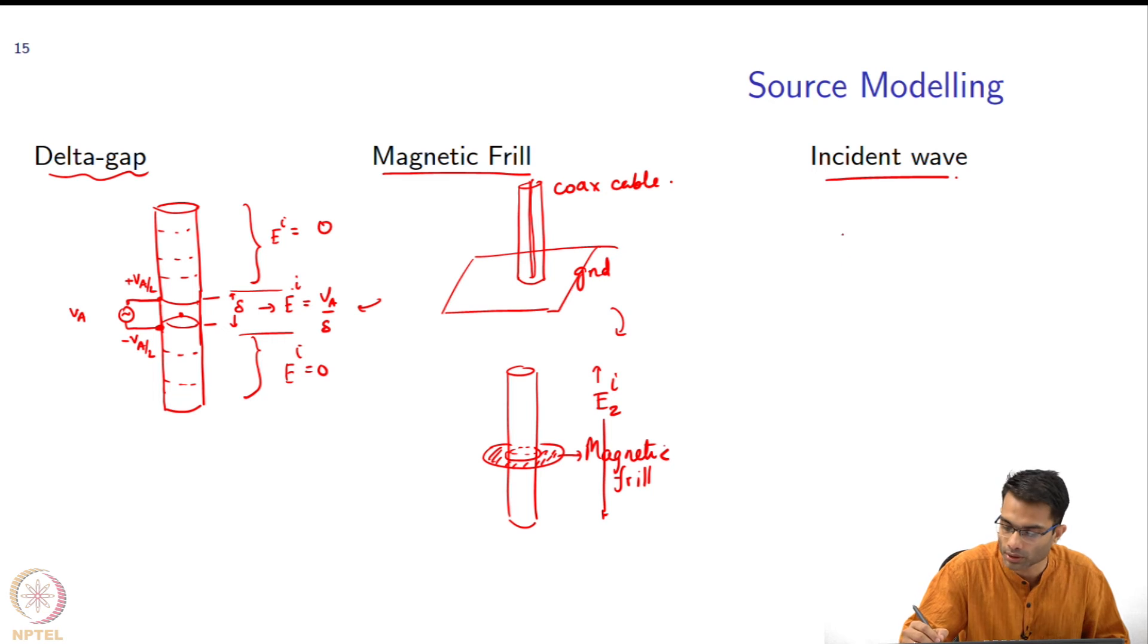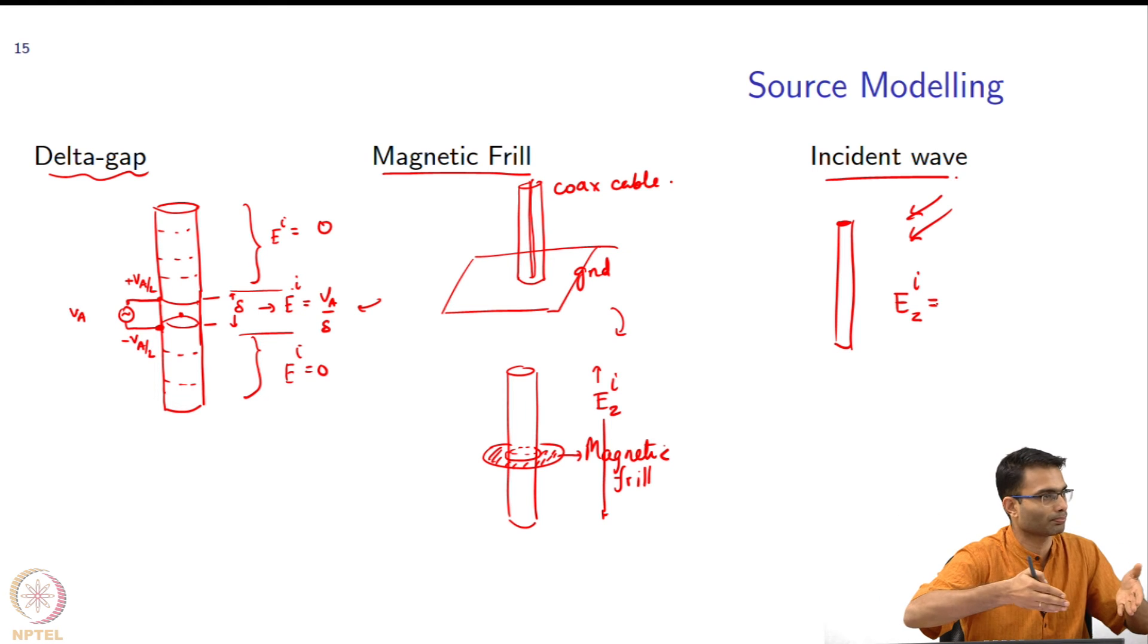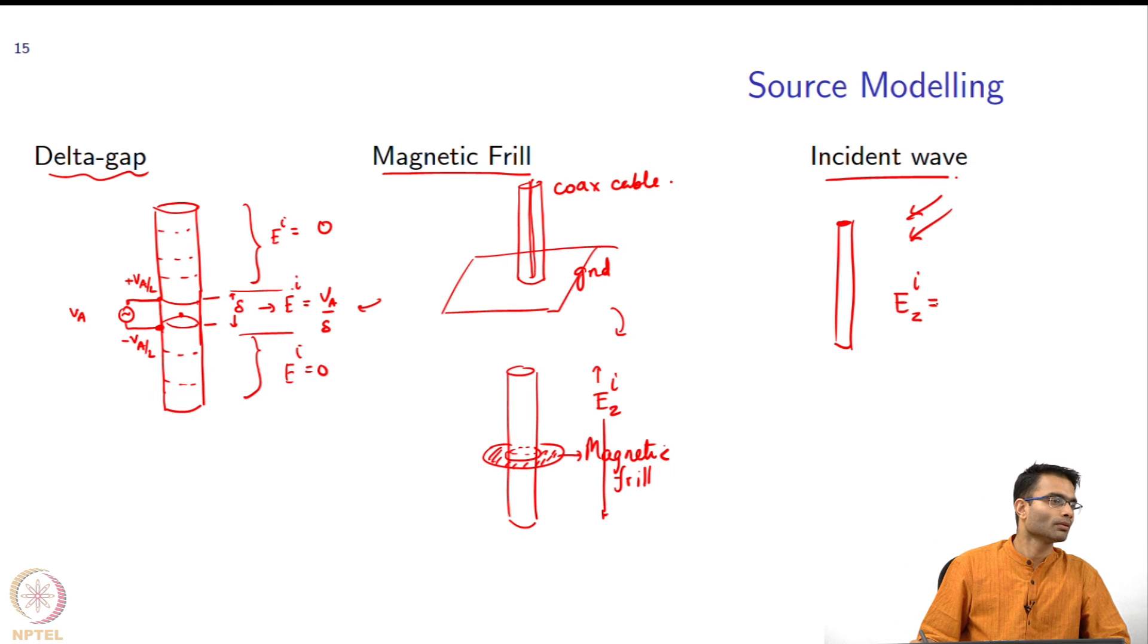Here is my antenna over here and there is some plane wave falling on it. In that case, what will I write? E_i z equal to minus - why minus incident field? It's just the value of the electric field. V by D. V by D, what is D though?